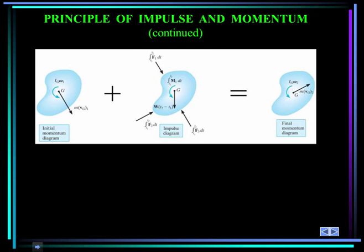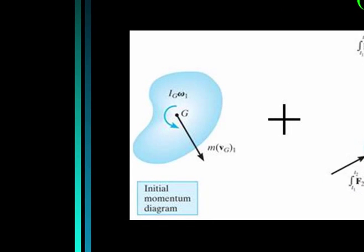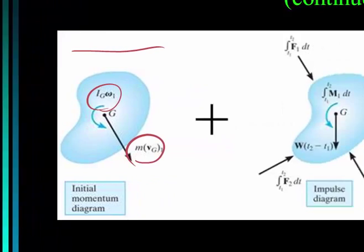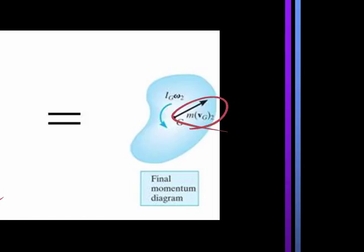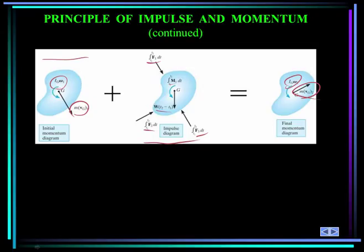That relationship is shown graphically here. The initial momentum diagram shows mass times the velocity of the mass center as the linear momentum, and I_G * omega_1 as the angular momentum. Added to that is the impulse diagram, showing all forces and moments integrated over time, including weight. This equals the final momentum diagram: the linear momentum at state two plus the angular momentum at state two. To summarize: if motion is in the XY plane, the linear impulse-momentum relationship applies in the X and Y directions, and the angular impulse-momentum relation applies about a Z axis through any point. This yields three scalar equations describing planar motion.